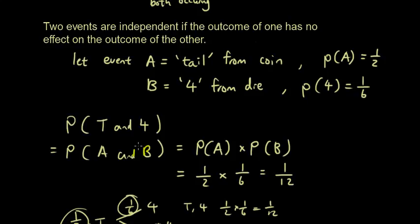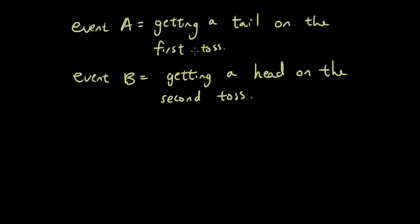Okay, let's do another example. So here's another example. Event A is getting a tail on the first coin toss. Event B is getting a head on the second coin toss. So what is the probability of both event A and B occurring?